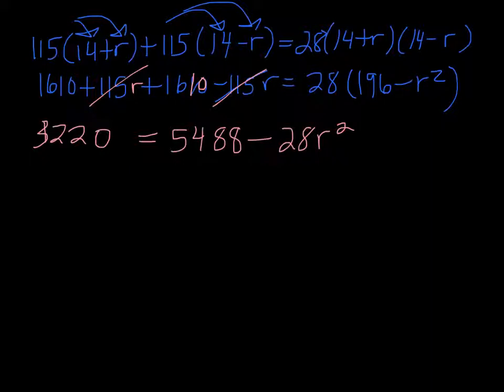We have a quadratic equation here. I'm going to put everything from the right side over to the left side, so we get 28r squared, and then 3220 minus 5488 is minus 2268 equals 0.